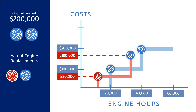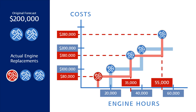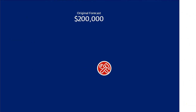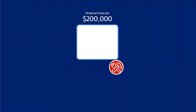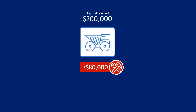However, with this one early failure, we now require three engines over its planned life. A second engine is needed at 35,000 hours and a third at 55,000. That is a cost overrun of $80,000 on a single component on a single asset.